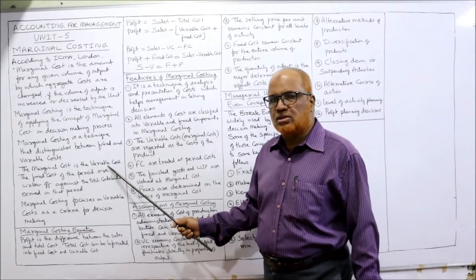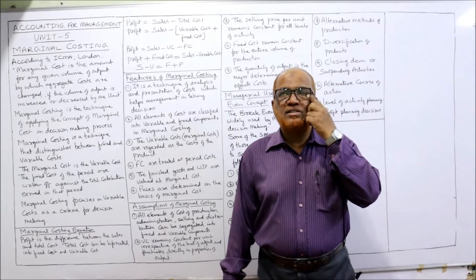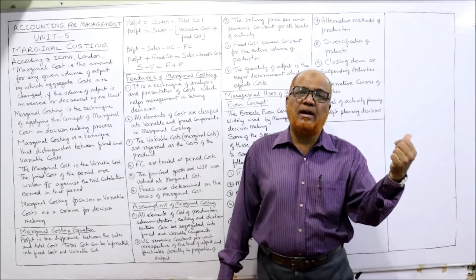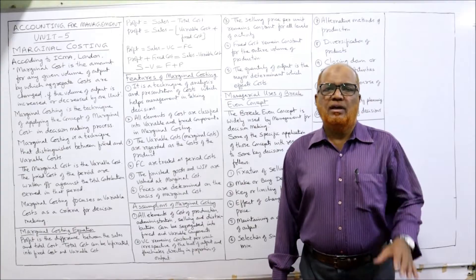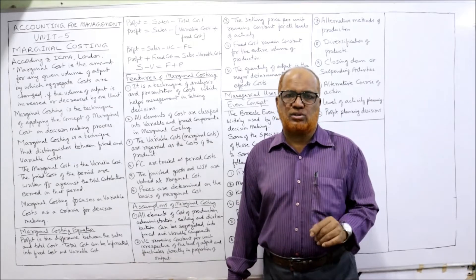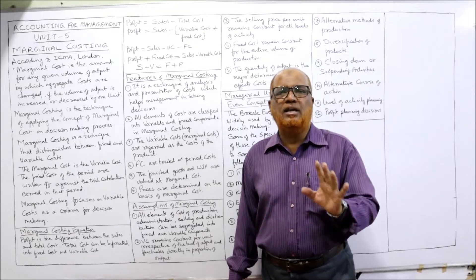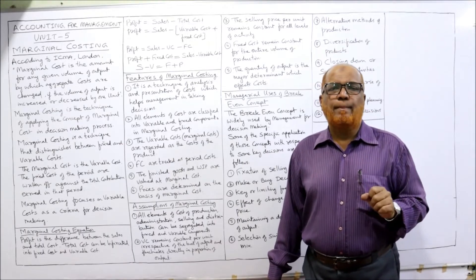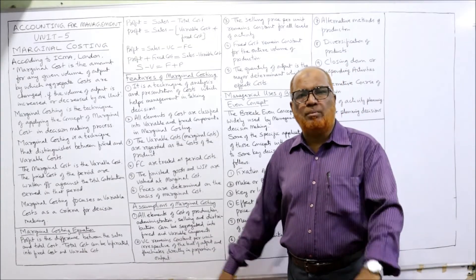Fixed cost remains constant, so the cost that changes is variable cost. In simple words, marginal cost is the variable cost. Fixed cost is the period cost — it is not related to production but to the time period. That is why variable cost is called the product cost and fixed cost is called the period cost. Marginal costing focuses on variable cost as the criteria for decision making, because fixed cost is incurred regardless of the decision — it is an irrelevant cost.